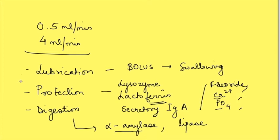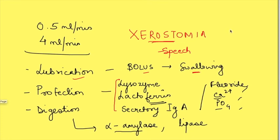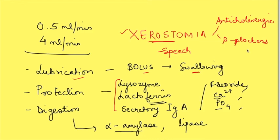Decreased salivary secretion is known as xerostomia, or dry mouth. It causes problems with lubrication and bolus formation, affecting swallowing, and may also impair speech. Without adequate salivary protection, dental caries may develop. Xerostomia commonly occurs with certain medications — anticholinergics, which block parasympathetic stimulation, and beta blockers, which block sympathetic stimulation, both reduce salivary secretion. Though medications are the most common cause, there are multiple other reasons as well.